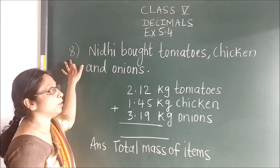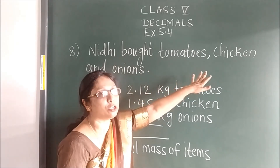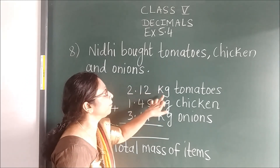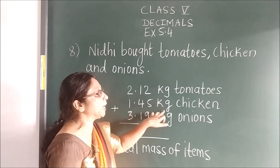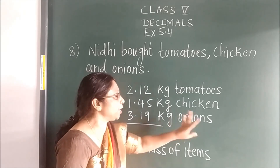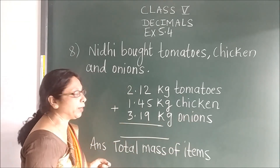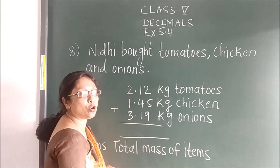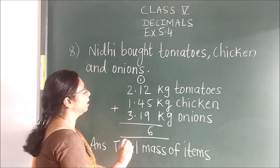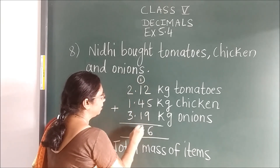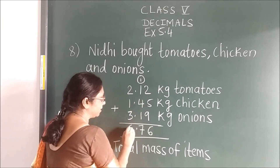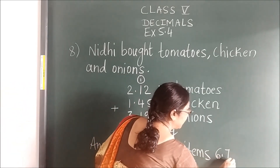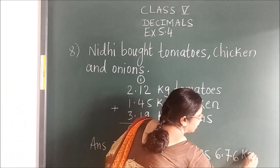Now the 8th word problem. Nidhi bought tomatoes, chicken, and onions: 2.12 kg tomatoes, 1.45 kg chicken, 3.90 kg onions. We have to find the total. So we add: 9 plus 5 is 14, plus 2 is 16 — write 6, carry 1. 4 plus 5 is 9, plus 1 is 10 — carry. 2 plus 3 is 5, plus 1 is 6. So the total mass of items is 6.76 kg.